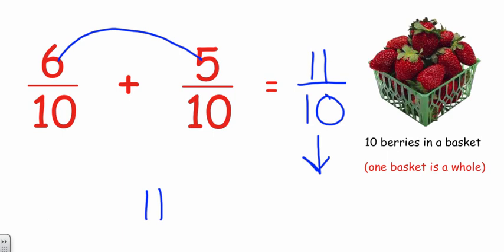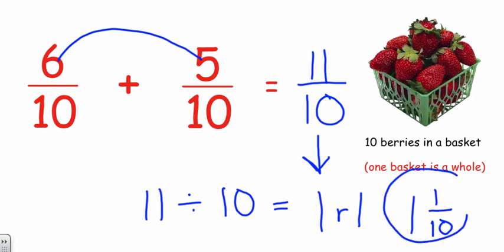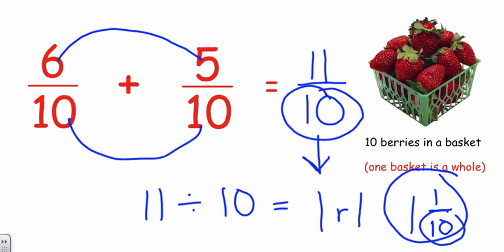Sometimes we have more than one, or we have a mixed number. So eleven-tenths, we would do eleven divided by ten. How many times does ten go into eleven? It goes in one whole time with a remainder of one, so we could rewrite that as one and one-tenth. Now compare that back to the whole, still we're looking at ten berries in a basket. You can see that with our mixed number, with our improper fraction, everything is over ten because that's our whole.